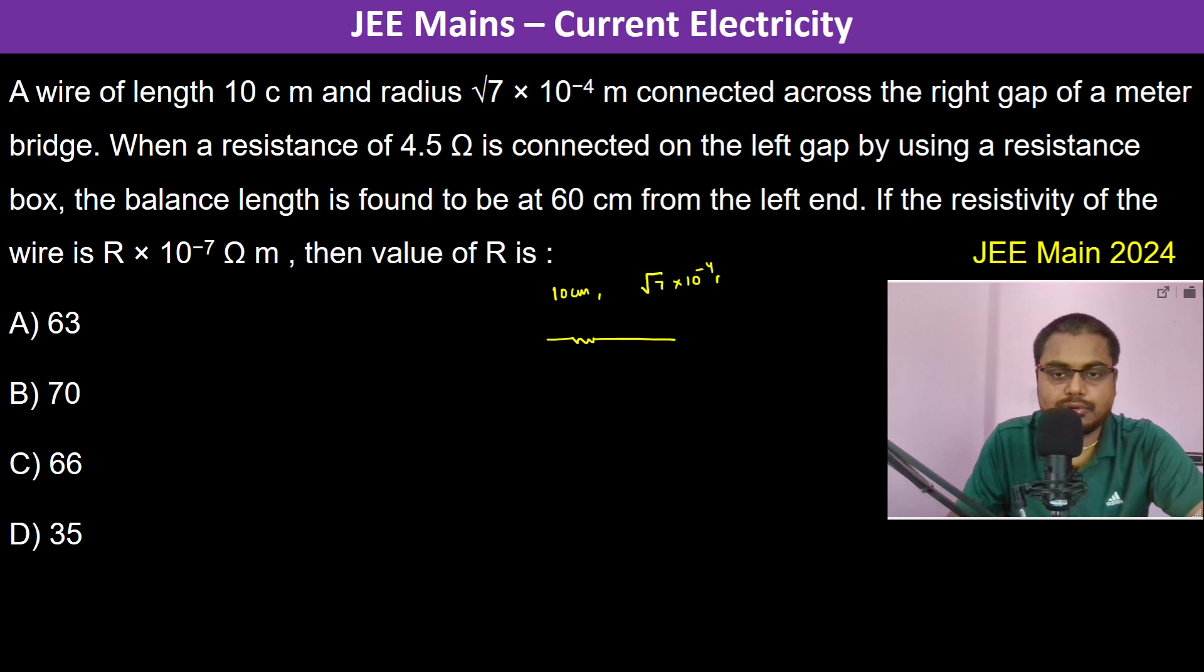When a resistance of 4.5 ohm is connected on the left gap by using a resistance box, the balance length is found to be at 60 centimeter from the left end. So this is the galvanometer and this is 60 centimeter length and this is 40 centimeter length.